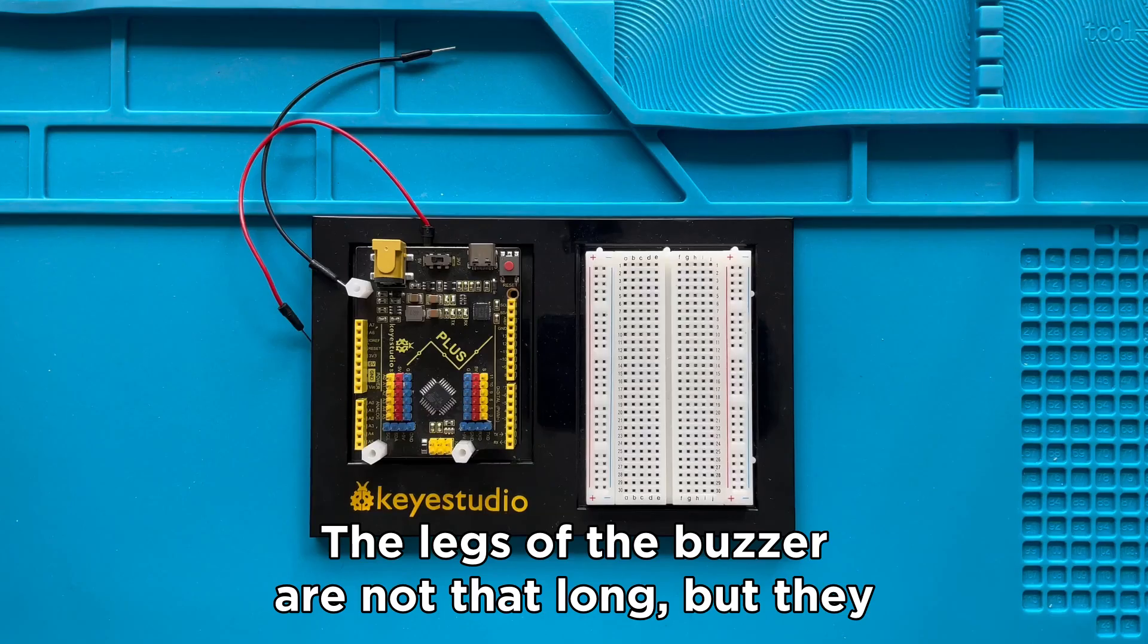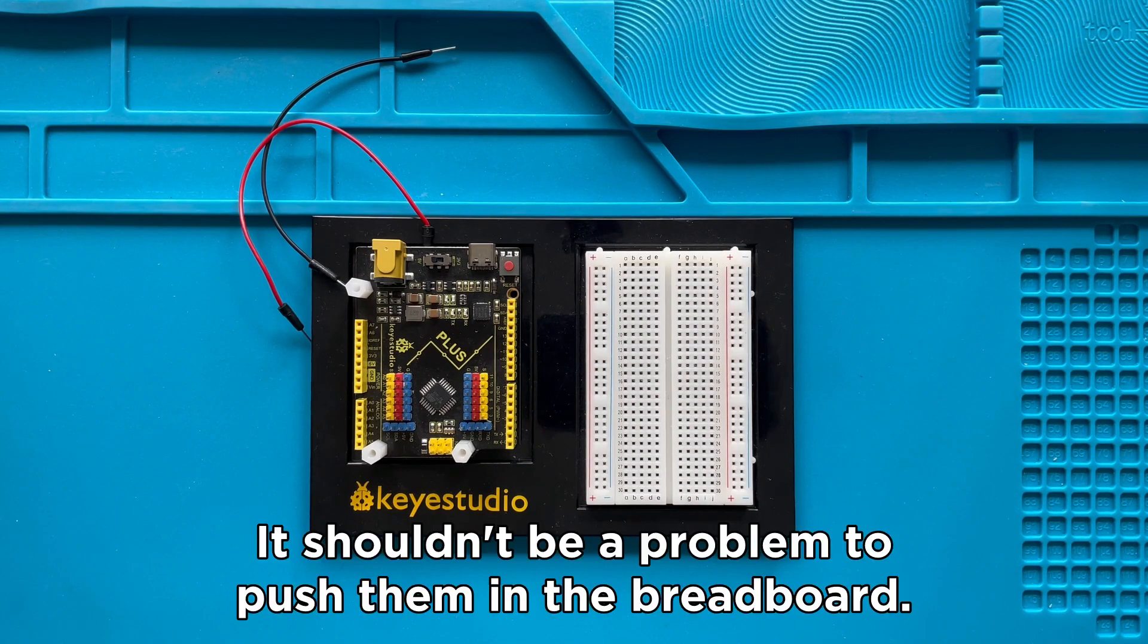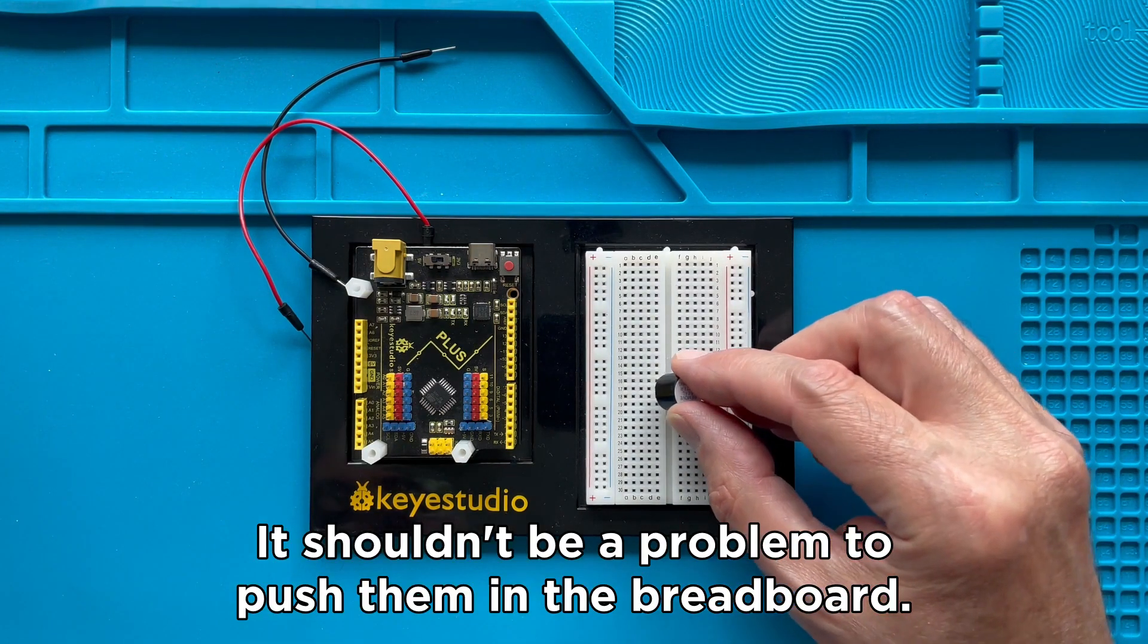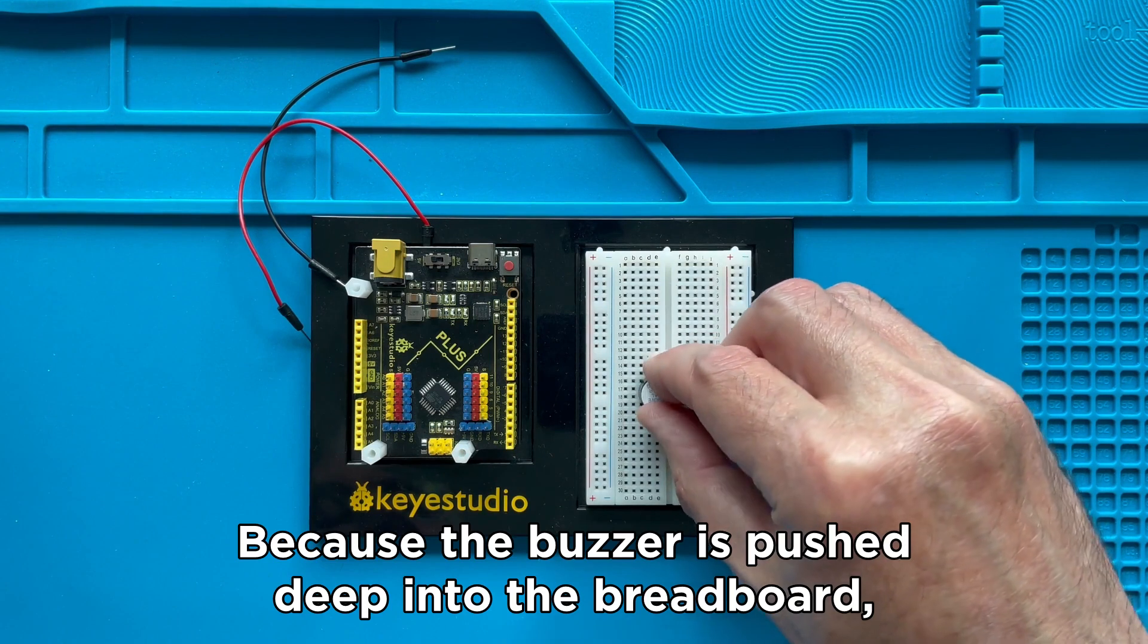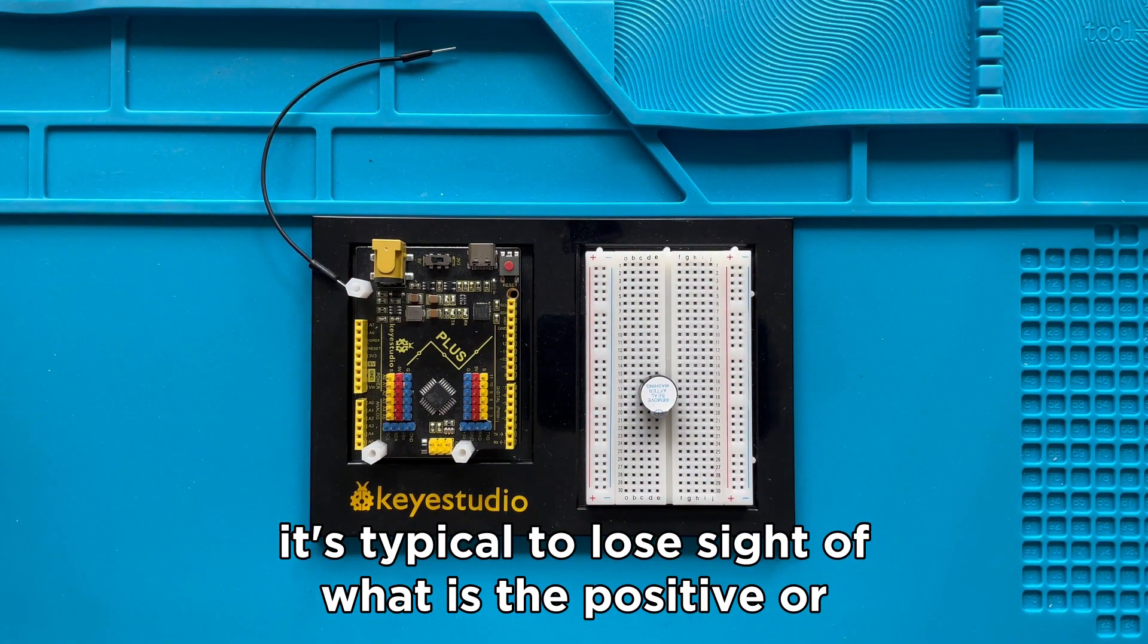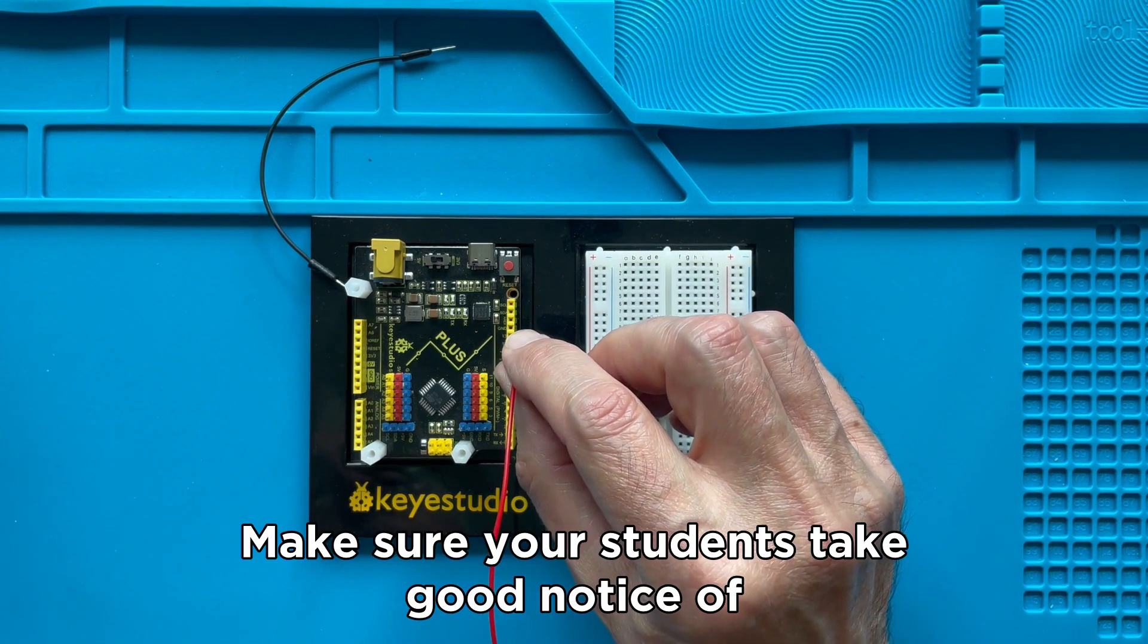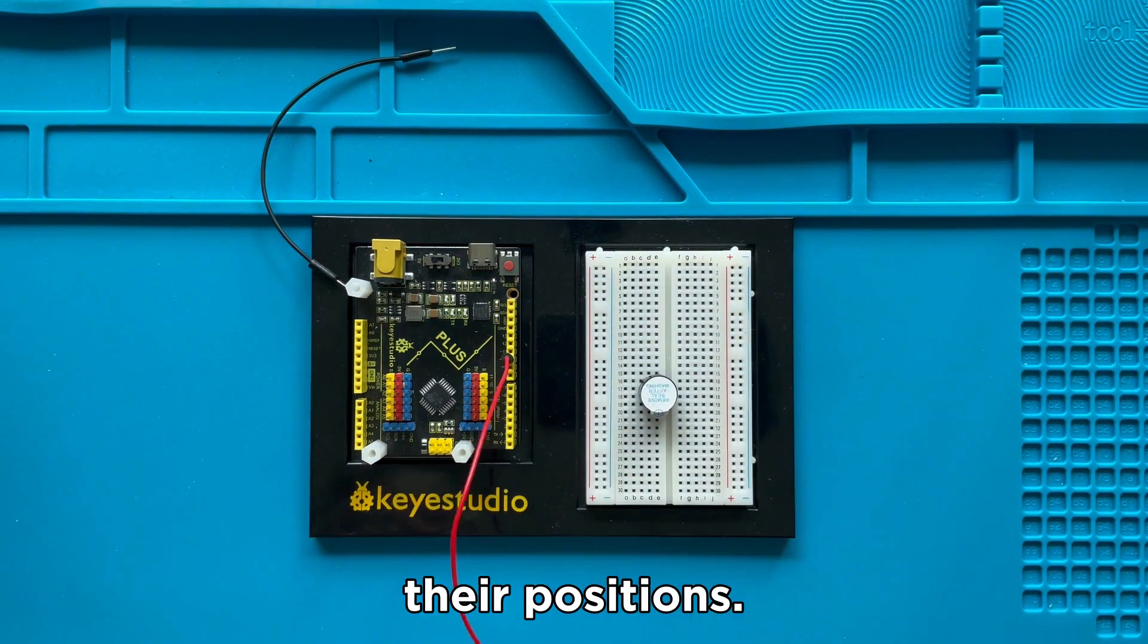The legs of the buzzer are not that long, but they are quite strong, so it shouldn't be a problem to push them in the breadboard. Because the buzzer is pushed deep into the breadboard, it's typical to lose sight of what is the positive or the negative leg. Make sure your students take good notice of their positions.